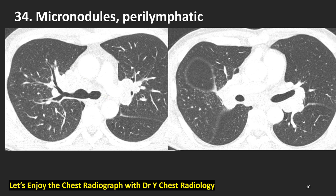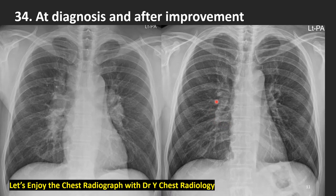This right-side radiograph is after improvement of sarcoidosis. What do we see? Normal — almost normal chest radiograph. The right-side lymphadenopathy of sarcoidosis has gone, the left side has also gone. Normal left hilum with normal left descending pulmonary artery. Also the mediastinal widening from lymphadenopathy has resolved. Normalized chest radiograph after improvement of sarcoidosis.